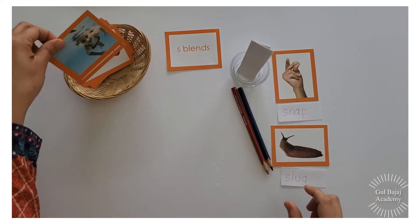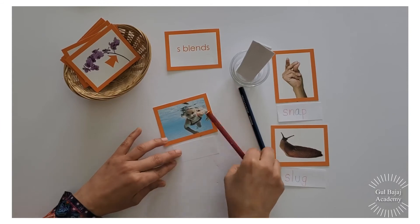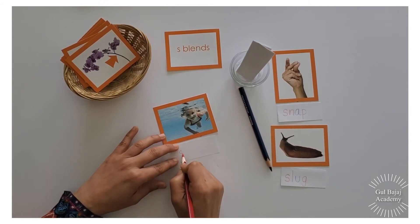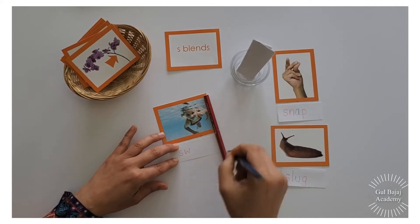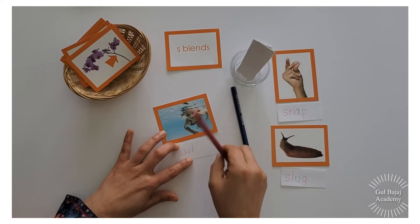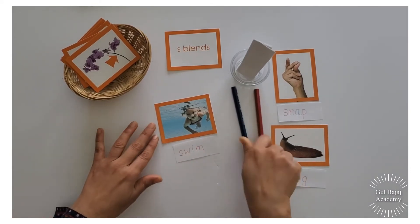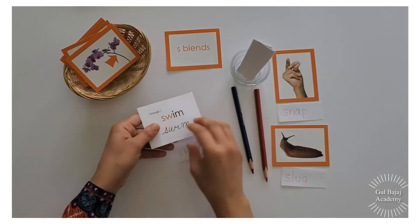Next one. Swim. S, w, i is my vowel, and m. Swim. Swim. Let's check. Good job.